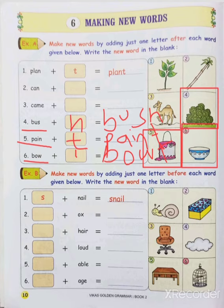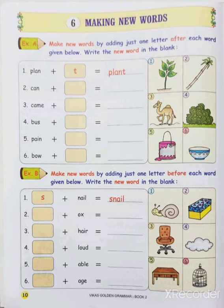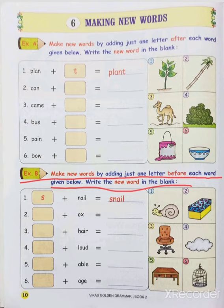The words are already given, so we just have to add one letter to make a new word. Moving to Exercise B: Make a new word by adding just one letter before each word given below. Write the new word in the blank. In Exercise A we put a letter at the end to make a new word. Now in Exercise B, we have to put a letter before the word to get a new word.